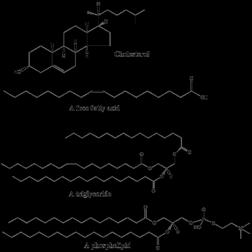Phosphatidylserine lipids are known to be involved in signaling for the phagocytosis of apoptotic cells or pieces of cells. They accomplish this by being exposed to the extracellular face of the cell membrane after the inactivation of flippases, which place them exclusively on the cytosolic side, and the activation of scramblases, which scramble the orientation of the phospholipids. After this occurs, other cells recognize the phosphatidylserines and phagocytose the cells or cell fragments exposing them.